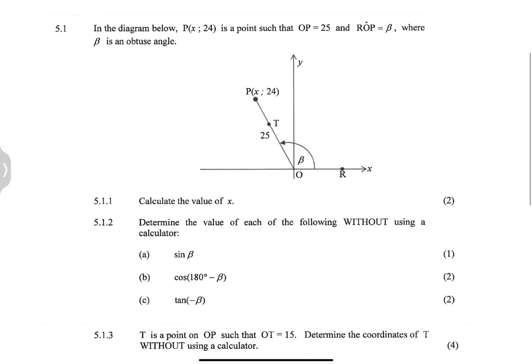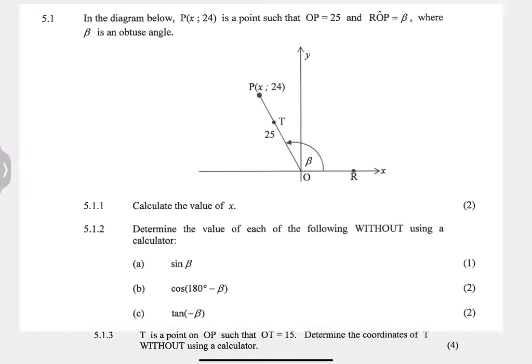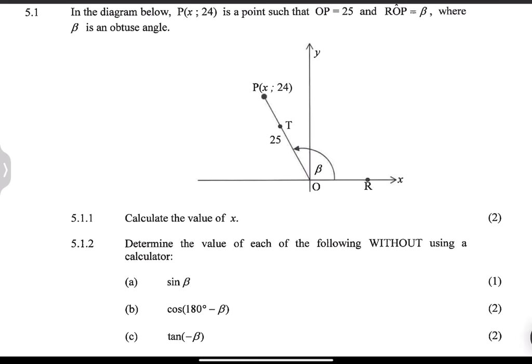In the diagram, we have point P which is (x, 24), such that OP equals 25. They say angle ROP is beta, where beta is an obtuse angle. They ask us to calculate the value of x. We know the distance OP is 25, and the y-value is 24, so we can use Pythagoras.